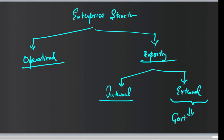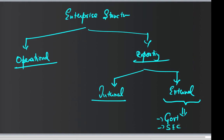External reporting is for the government, the SEC, or any other external board requiring data. For a public limited company like Apple, they need to file returns to the SEC because they deal with public money. For a private limited company, the government needs transactions for tax records. The key org element used for this external reporting is company code.